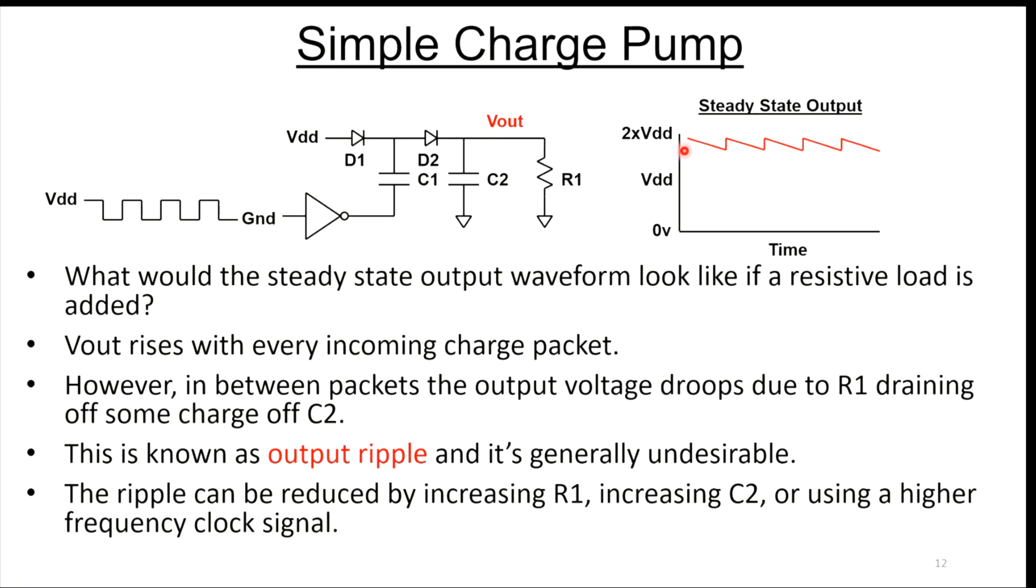I showed it as a straight line here. It's really an RC time constant. This output waveform is known as output ripple. If you hear the term ripple on charge pump, it really means how much the output is varying with time.